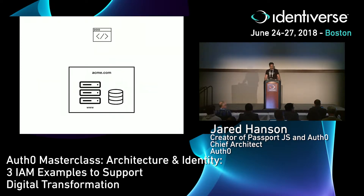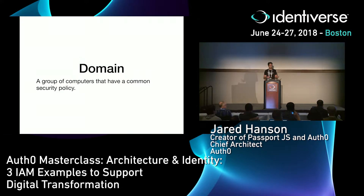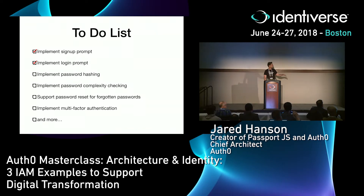Zooming out, we have acme.com — the domain our application is running on — with a set of web servers, a database for user records, and users out there with web browsers. The important concept going forward is that of a domain: the collection of computers that share a common security policy and the users they manage. In our simple application, we have one domain, acme.com, with its servers and users, and it doesn't talk to anyone else. To build this out fully, we'd need password hashing, complexity checking, resets, and so on — but we're not going into that. We're focusing on the high-level understanding of how everything fits together.